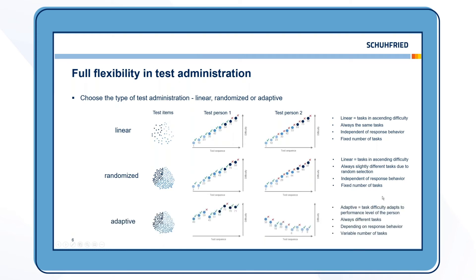In the adaptive test administration mode, you again have a large item pool. But here the items are not presented in a linear fashion — they adapt to the response behavior and the general ability level of the person. This gives you the opportunity to measure exactly at the person's performance level. Depending on the response behavior, there are always different tasks and also a different number of tasks.